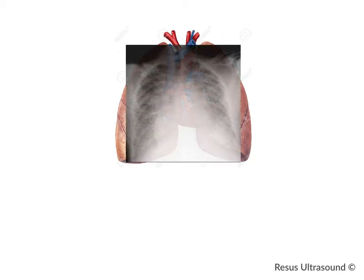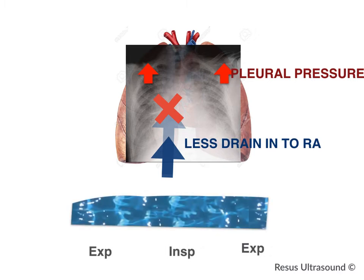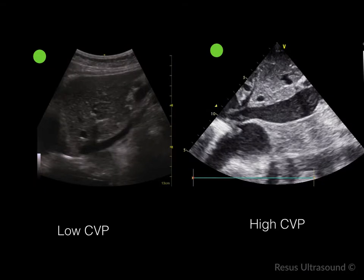When you have increased RA pressure — like in heart failure or poor cardiac function — the pleural pressure goes up, so the IVC cannot drain into the RA anymore. The diameter of the IVC becomes rigid and looks the same whether it's inspiration or expiration. This also happens in cardiac tamponade, pulmonary embolism, and tension pneumothorax — anything that prevents the IVC from draining into the RA.